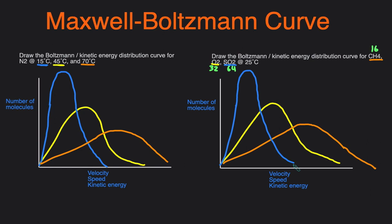That's how you can draw, read, and interpret Maxwell distribution or kinetic energy distribution curves. Remember: if you're shifting the curve to the left it has to be taller, and if you're shifting it to the right it has to be flatter. A decrease in temperature or an increase in mass will shift it to the left; an increase in temperature or a decrease in mass will shift it to the right, because the molecules will be moving faster.